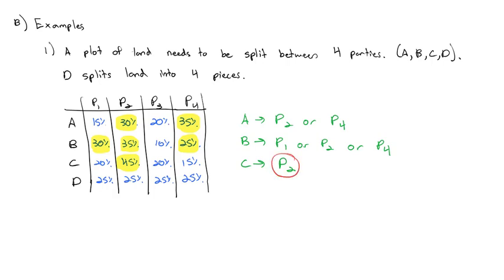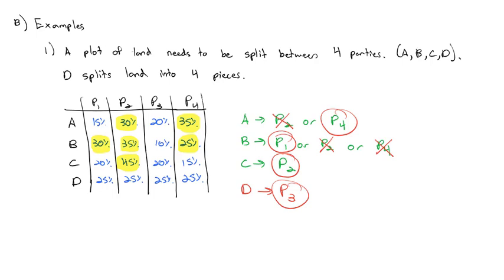So is it possible to make everybody happy? In this case, it is. If we give piece two to player C, then A would be content with piece four. With piece four gone, B would be content with piece one, which leaves piece three for player D. Giving piece one to B, piece two to C, piece three to D, and piece four to A means everyone got at least a fair share of 25%. That is how the lone divider method works — this is really the best case scenario.